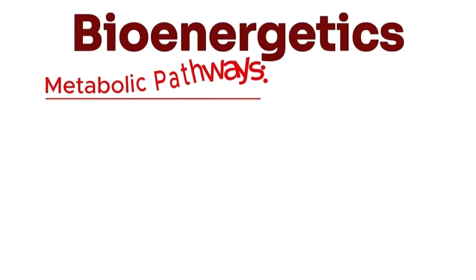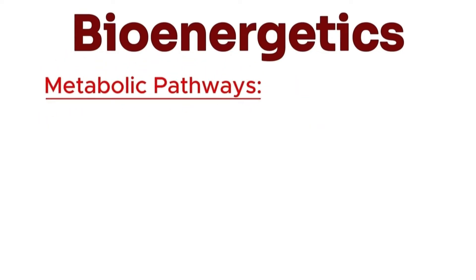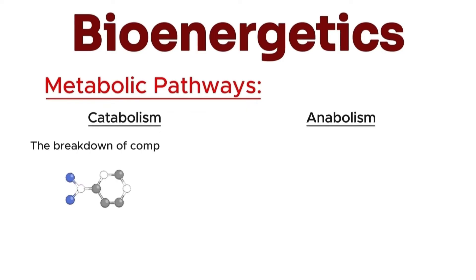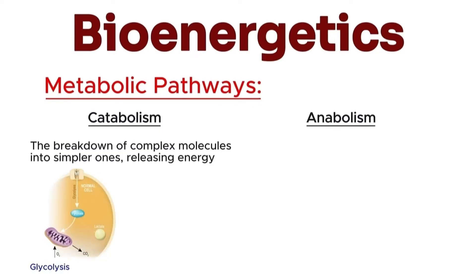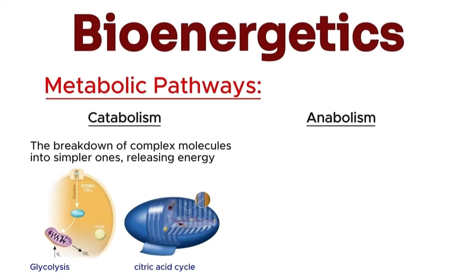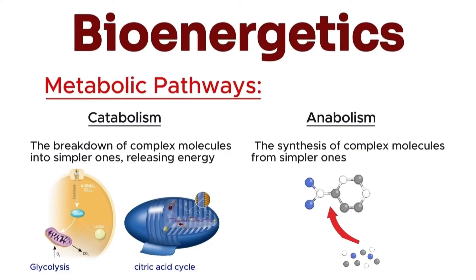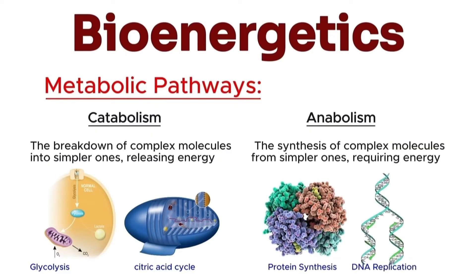Now let's discuss metabolic pathways. There are two types in living organisms: catabolism and anabolism. Catabolism is the breakdown of complex molecules into simpler ones, releasing energy. Examples include glycolysis and the citric acid cycle. On the other hand, anabolism is the synthesis of complex molecules from simpler ones, requiring energy. Examples include protein synthesis and DNA replication.